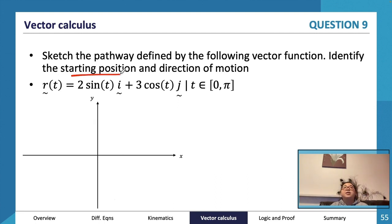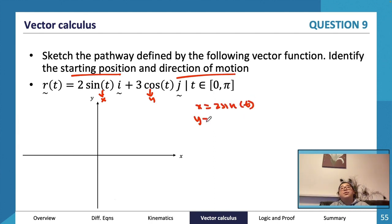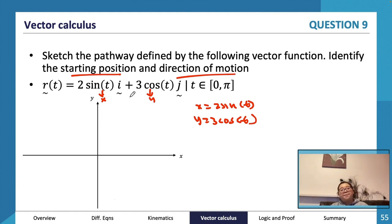For an example: 'Sketch the pathway defined by the following vector function; identify the starting position and direction of motion.' We make the first component equivalent to x and the second equivalent to y, so x = 2 sin(t) and y = 3 cos(t). The reason is that i corresponds to the horizontal plane matching x, and j corresponds to the vertical plane matching y.